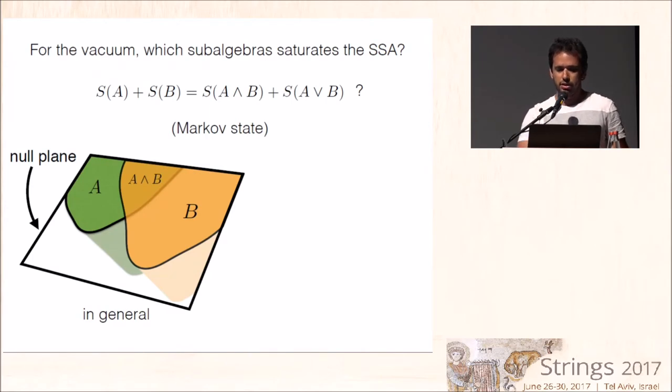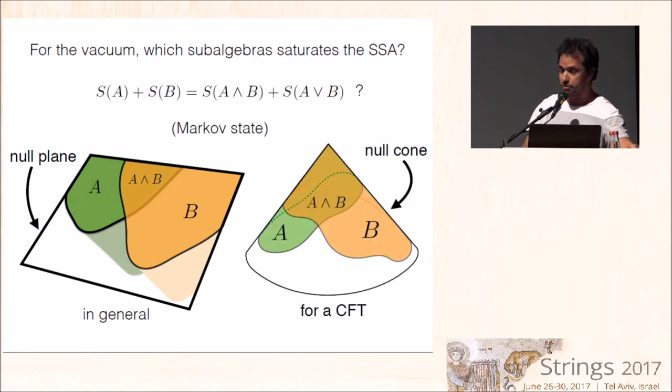You need to take the regions A and B such that their null future horizon lies in the same plane in general for the vacuum of any QFT. And for the case of a CFT, we have a better statement, which is that the null horizon of this region can also lie on a null cone.